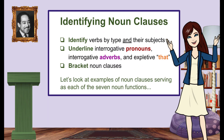So how do we find noun clauses? Here are the first steps: identify verbs by type and their subjects; underline interrogative pronouns, interrogative adverbs, or the expletive 'that'; and then bracket the noun clause. Let's look at examples of noun clauses serving as each of the seven noun functions.